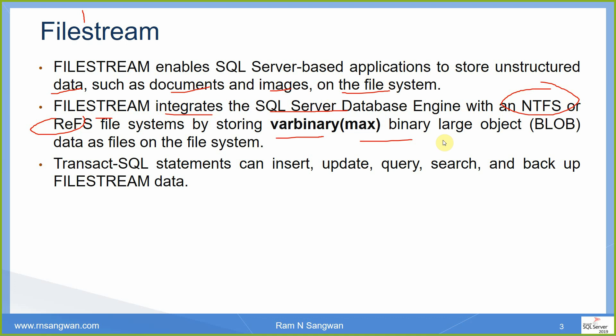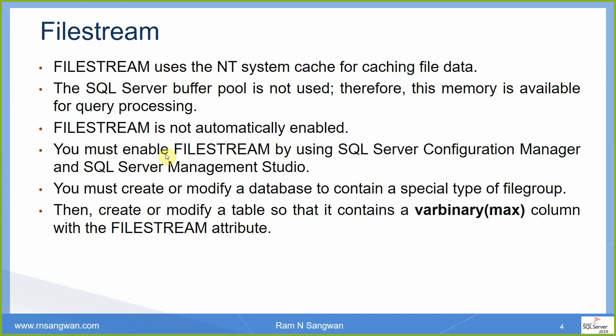This reminds me of my early learning with dBase 3+ and FoxBase. There was a data type called 'memo' — M-E-M-O — which stored only pointers in the database table. The pointer was 10 bytes and specified the name or path to the actual file, which could contain large data like images or documents. Similarly, in FileStream the data is stored elsewhere but the pointer is stored in the table. T-SQL statements can insert, update, query, search, and backup FileStream data. It uses the NT system cache for caching file data — the SQL Server buffer pool is not used, so memory remains available for query processing.